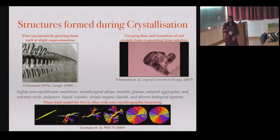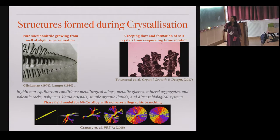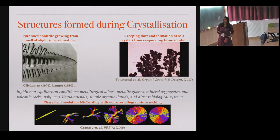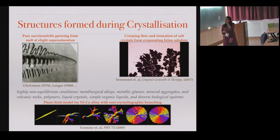There was literature by Glicksman, Langer, and many others about the instabilities formed during growth of these crystals. This is a movie of a brine solution being evaporated and the crystals being formed — the spreading solution quickly forms a network of crystals. These kinds of systems are seen in alloys, metallic glasses, polymers, and biological systems, and can be theoretically understood by phase field models.